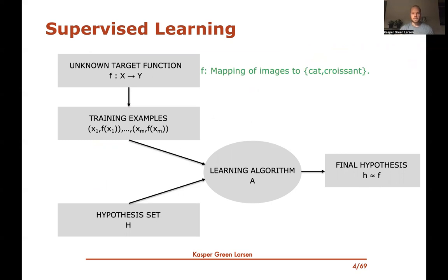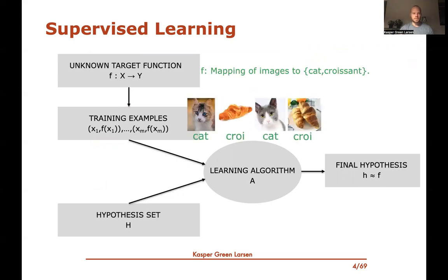So in the cat and croissant example, f is the correct mapping of images to labels, and the training examples are concrete images where we know the label. The learning algorithm searches through a hypothesis set to produce h. We try to find a hypothesis that predicts the labels of the training data correctly, since we can verify those predictions.